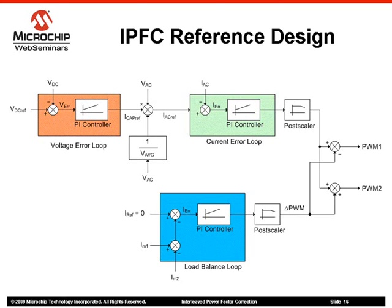To balance the current through both inductors, a load balance loop is implemented. The inputs to this compensator are the two currents IM1 and IM2. If these currents are different, an imbalance is detected. The PI controller will regulate this error and adjust the MOSFETs duty cycle. The output of the load balance control loop is a duty cycle correction term, or delta PWM, which is subtracted from PWM1 to get the final duty cycle for the first boost converter and added to PWM2 for the second boost converter.